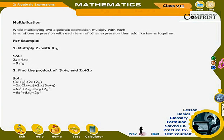Multiplication: While multiplying two algebraic expressions, multiply each term of one expression with each term of the other expression, then add like terms together. For example: (1) 2x × 4xy = 8x²y. (2) Find the product of (3x + y) and (2x + 2y). Solution: (3x + y)(2x + 2y) = 2x(3x + y) + 2y(3x + y) = 6x² + 2xy + 6xy + 2y² = 6x² + 8xy + 2y².